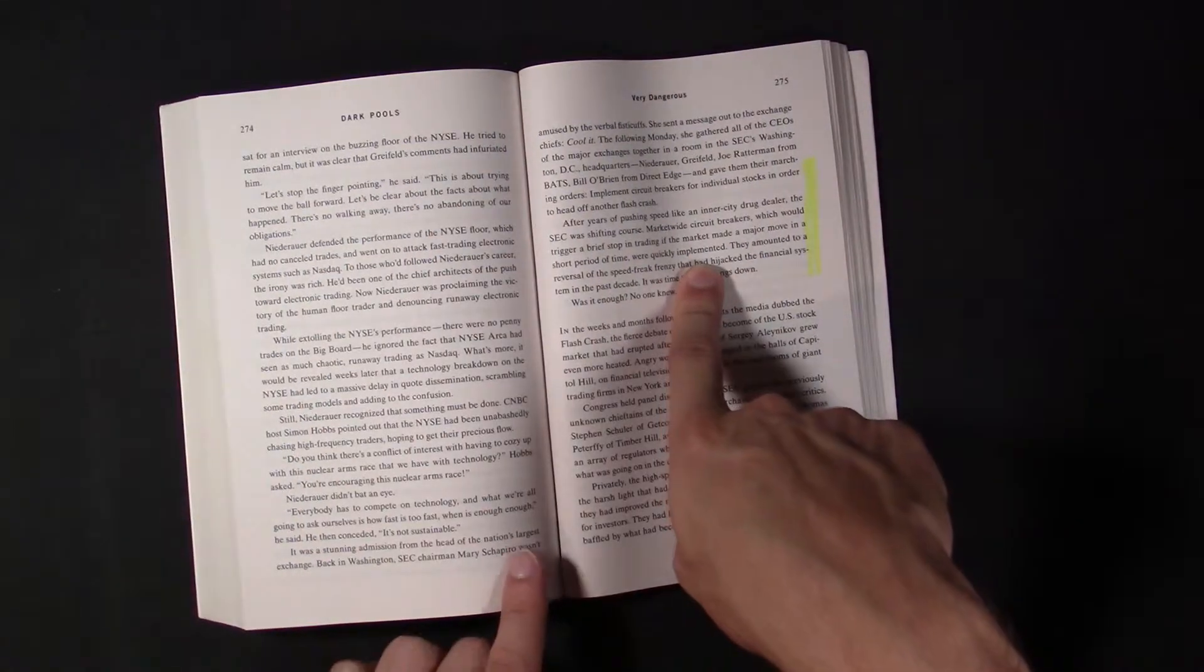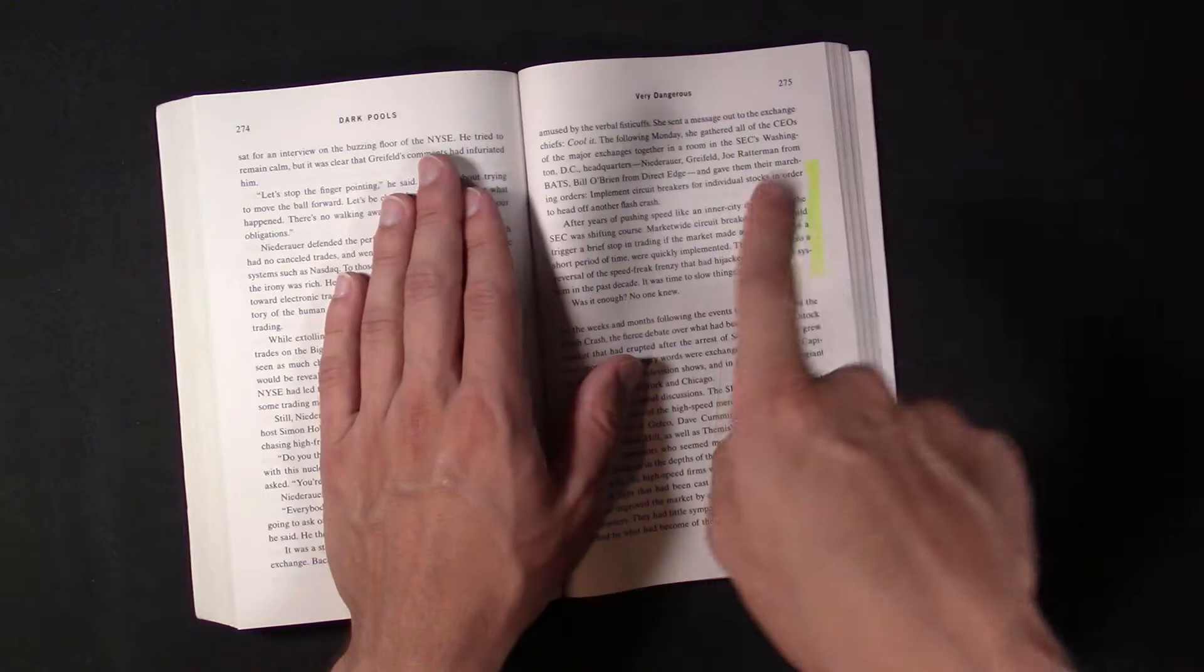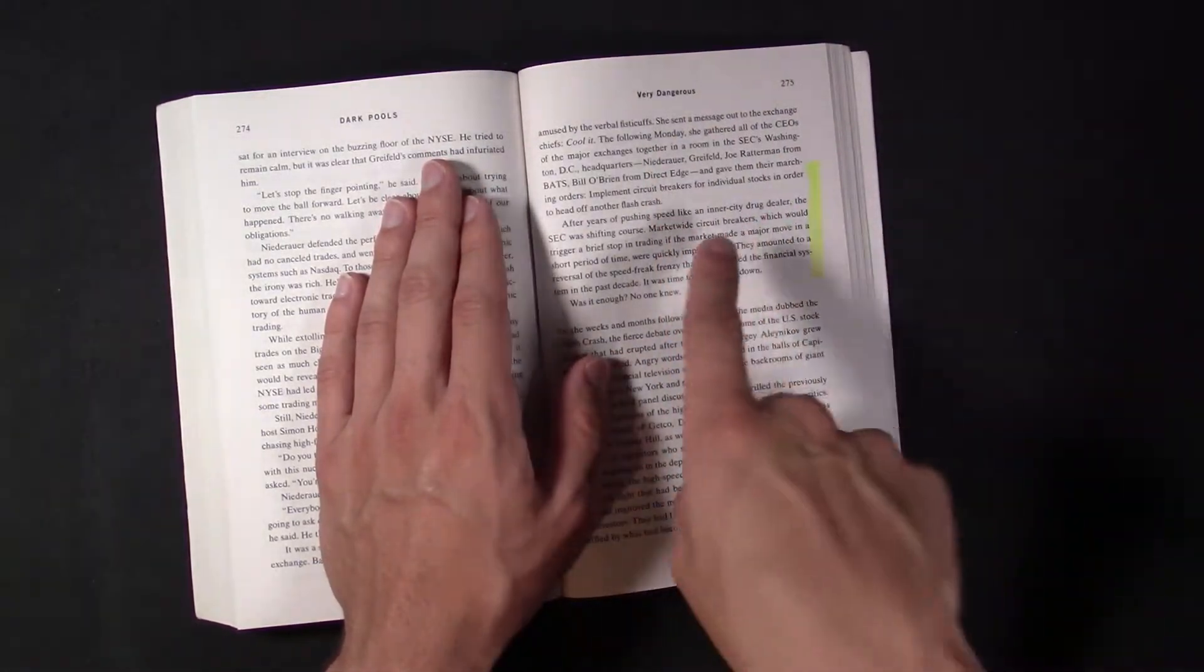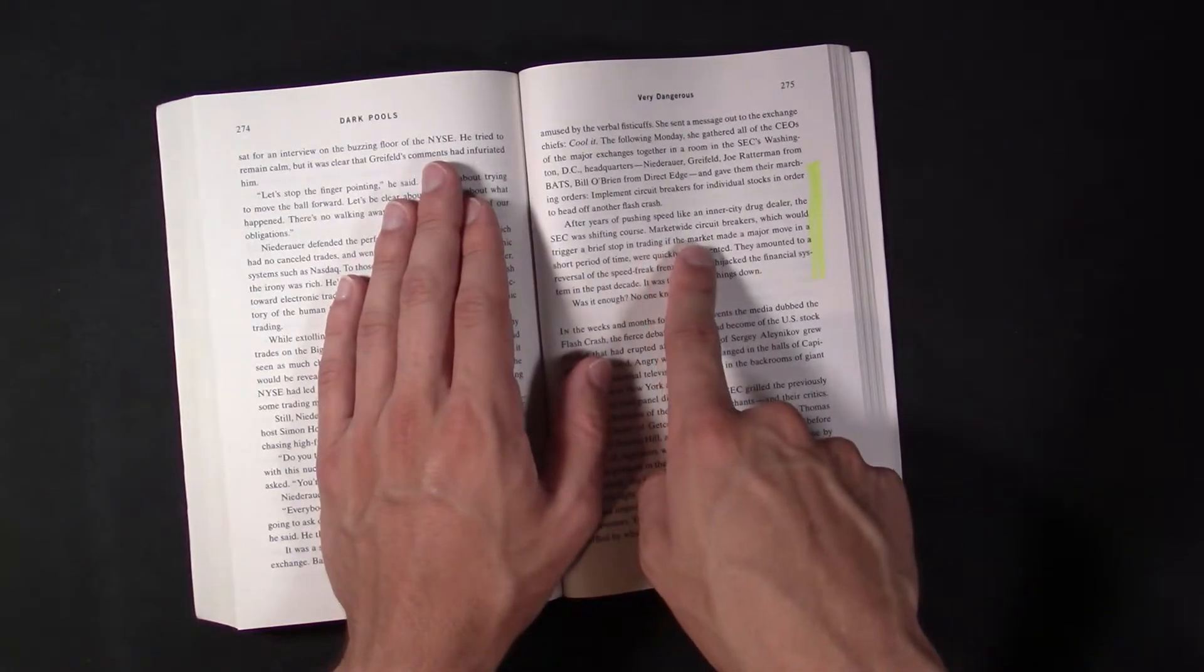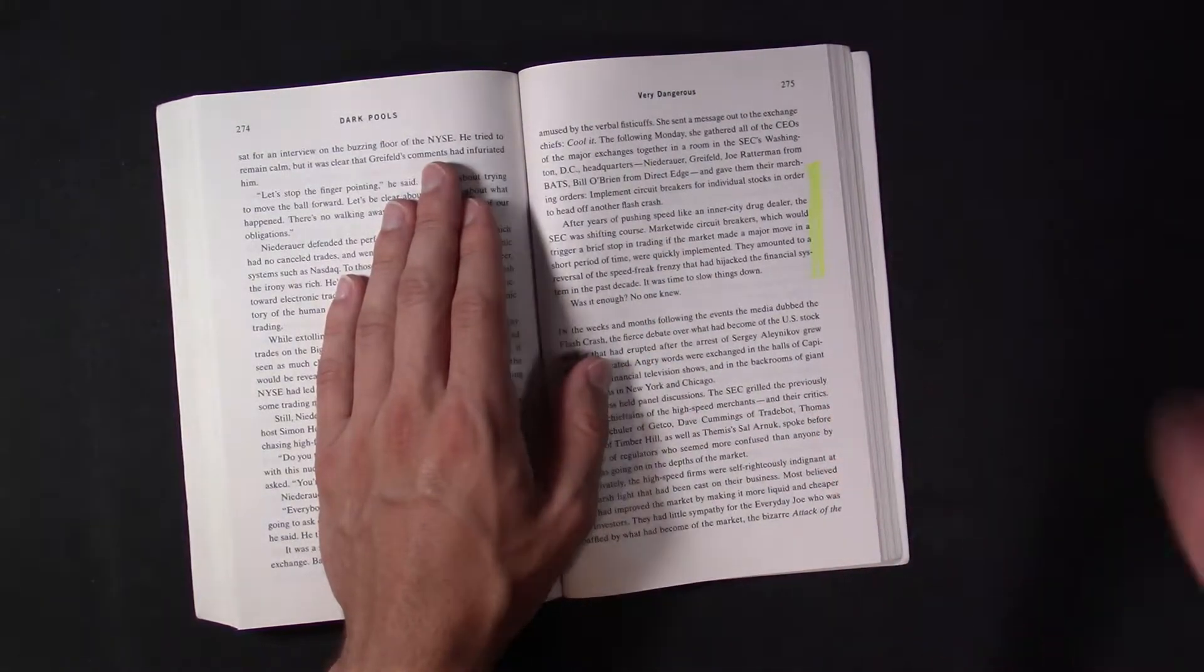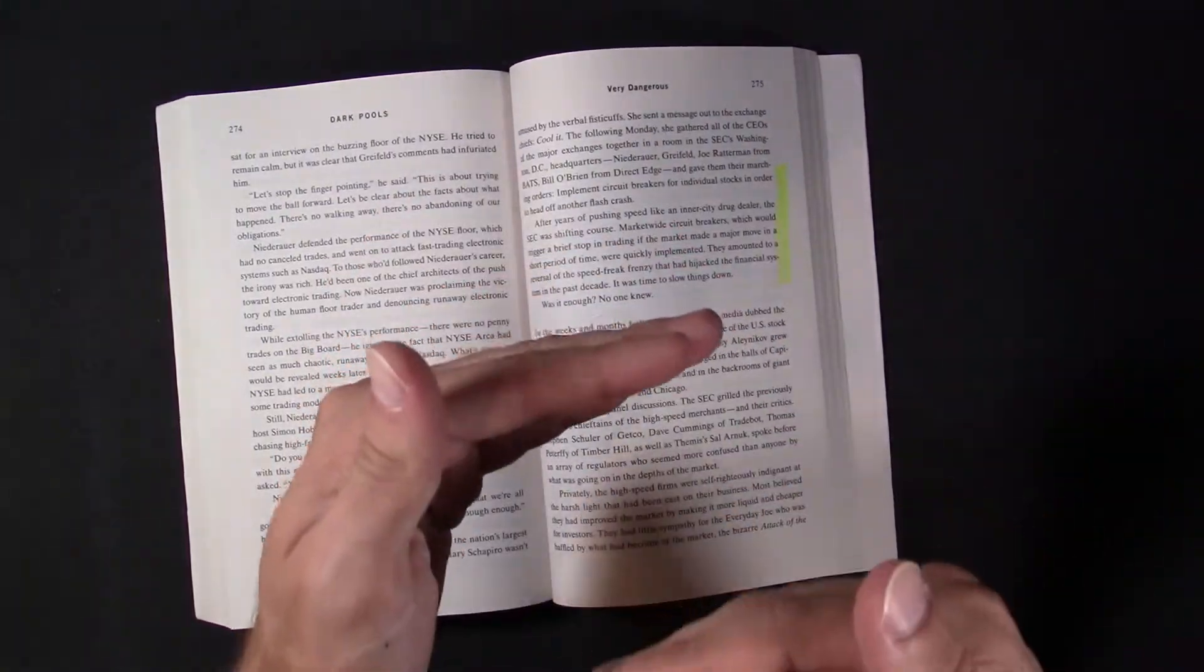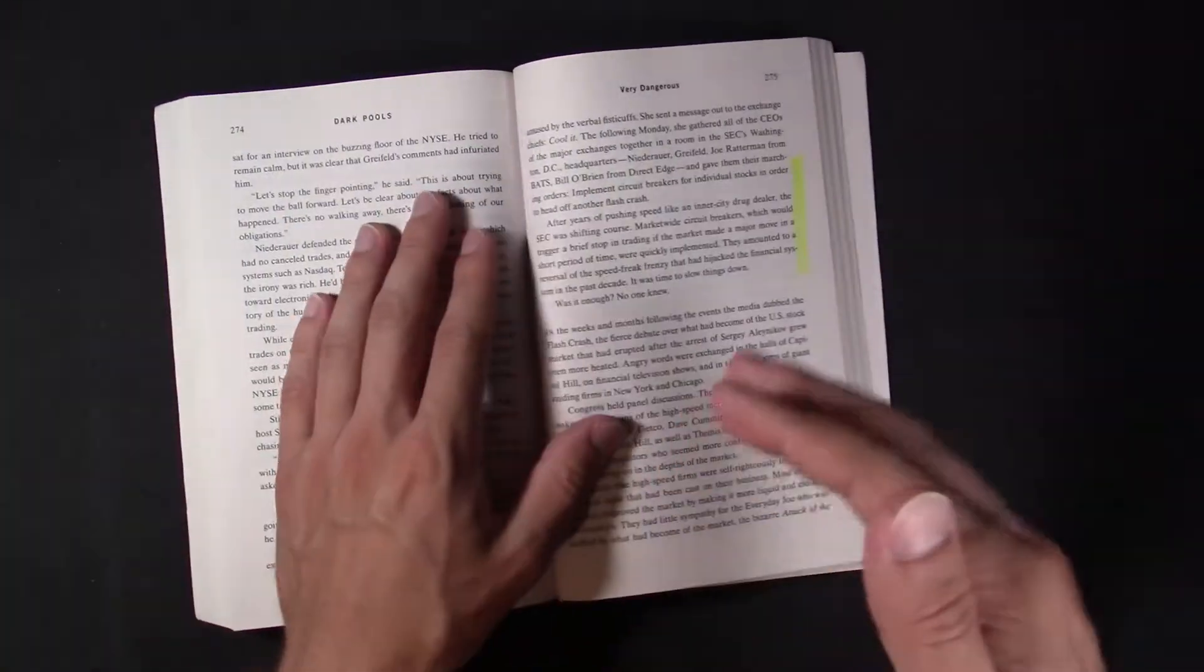Basically, I forgot what year, it probably says in here, but the SEC made this like a law that there has to be market-wide circuit breakers. So, it would trigger a stop in the trading in case something happened because it needed time for these algorithms and bots to cool off.